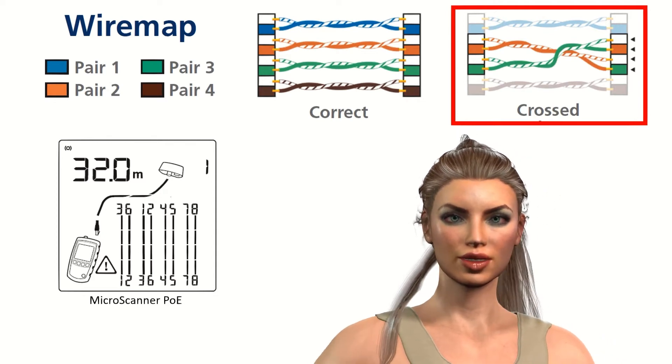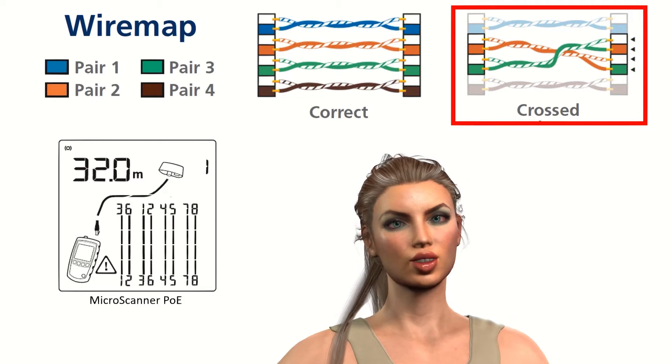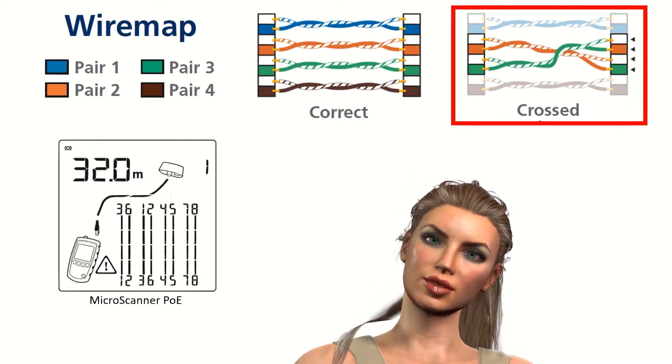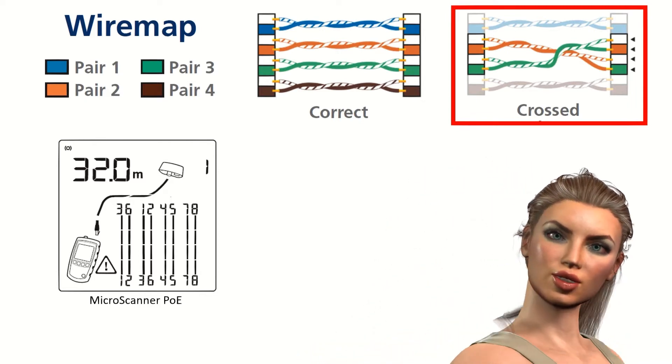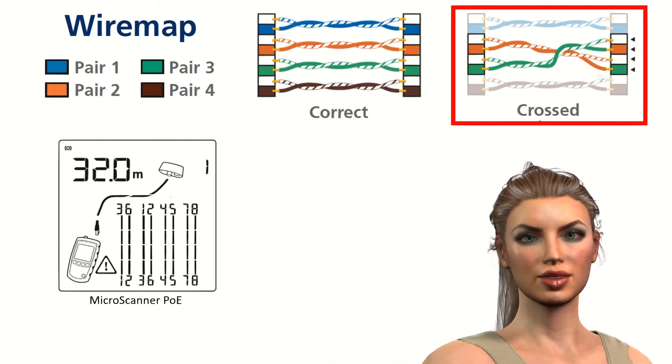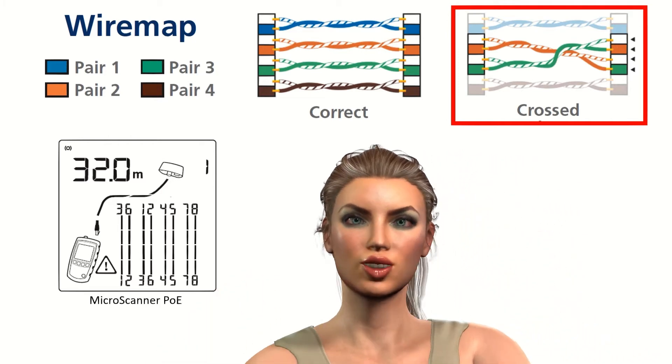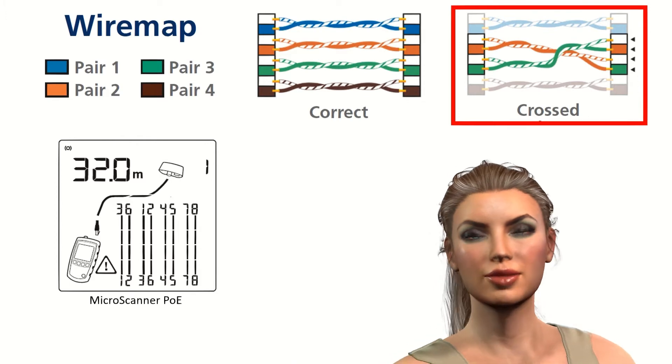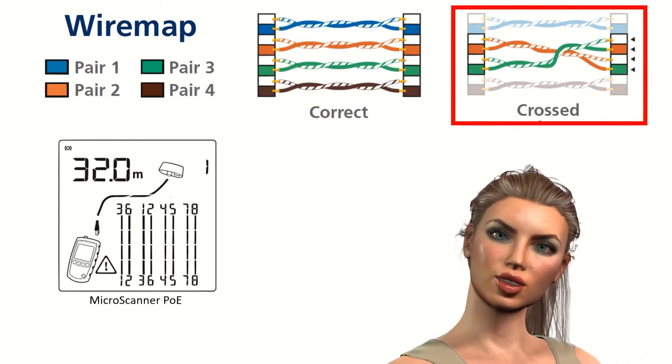Or for example in the image on the left, the pair 1 to 2 ends in the pair 3 to 6 at the other end. This problem can appear for example if the same color code is not followed at both ends of the cable, and a technician wires a connector with the T568A color assignment and at the other end another technician wires it with the T568B assignment.